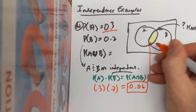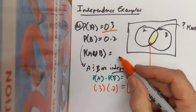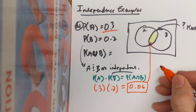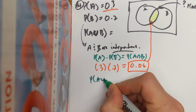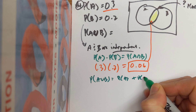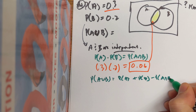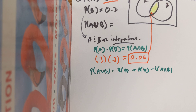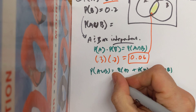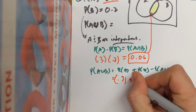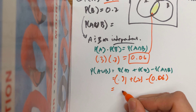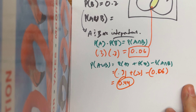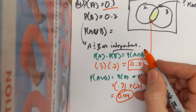That's the number that goes right there. And if that's the case, I can just use the general addition rule: the probability of A union B equals the probability of A plus the probability of B minus the probability of A intersect B. That's simply 0.3 plus 0.2 minus 0.06, which gives me 0.44. That's my answer — just that fact of independence. If they weren't independent, the union could be anything between 0.3 and 0.5.